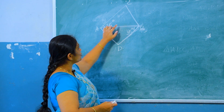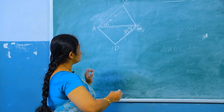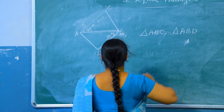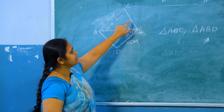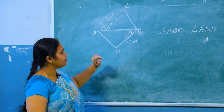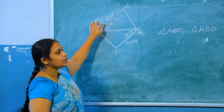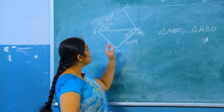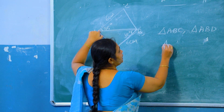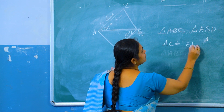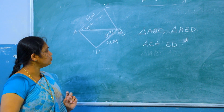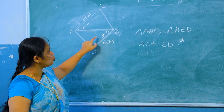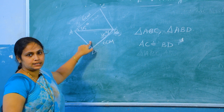Now, consider here two triangles: triangle ABC and triangle ABD. It is also given that AC equal to 6 centimetre and BD equal to 6 centimetre. In these two triangles, AC equal to BD. And AB is a side common to both of these two triangles.